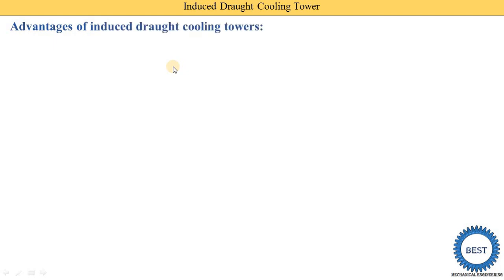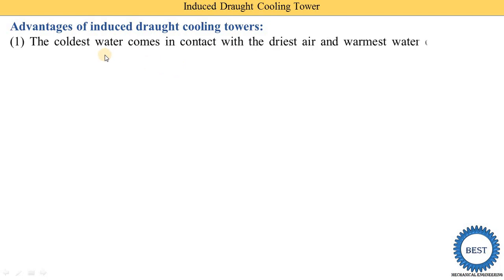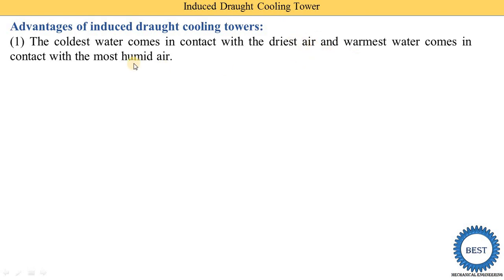Now I will explain the advantages of induced draft cooling towers. The coldest water comes in contact with the driest air. Cold water is available at the bottom where the dry incoming air first enters. The warmest water at the top comes in contact with the most humid air.